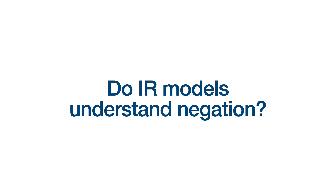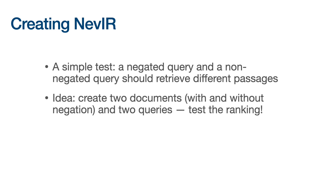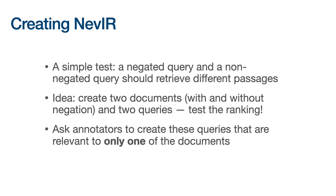So the question that we want to answer today is: do information retrieval models understand negation? In order to do this, we create a benchmark called NEVER. We want to answer a simple test: if you have a negated query and a non-negated query, you should retrieve different passages, especially if there's negation in the documents. Our idea is to create two documents — one with negation and one without — and two queries, one negated and one not, and test a simple ranking to see which one the model prefers. Crucially, we designed this so that one document is deemed relevant and the other irrelevant to each query.